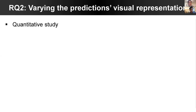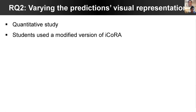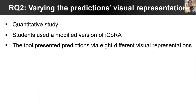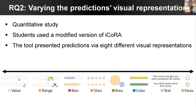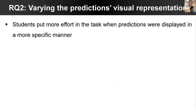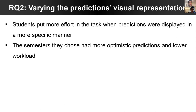To answer the second question, we conducted a quantitative study in which students used a modified version of iCORA. In this version, the tool presented predictions via eight different visual representations that together span a spectrum between specific and vague representations. We found that students put more effort into the task when predictions were displayed in a more specific manner — that is, the semester they chose had more optimistic predictions and lower workload.